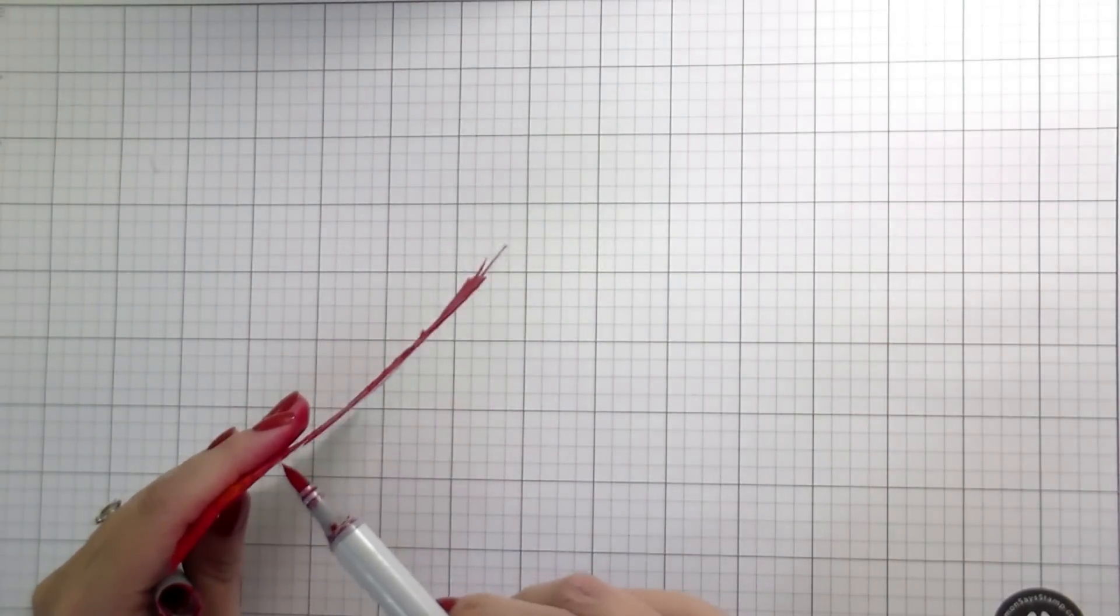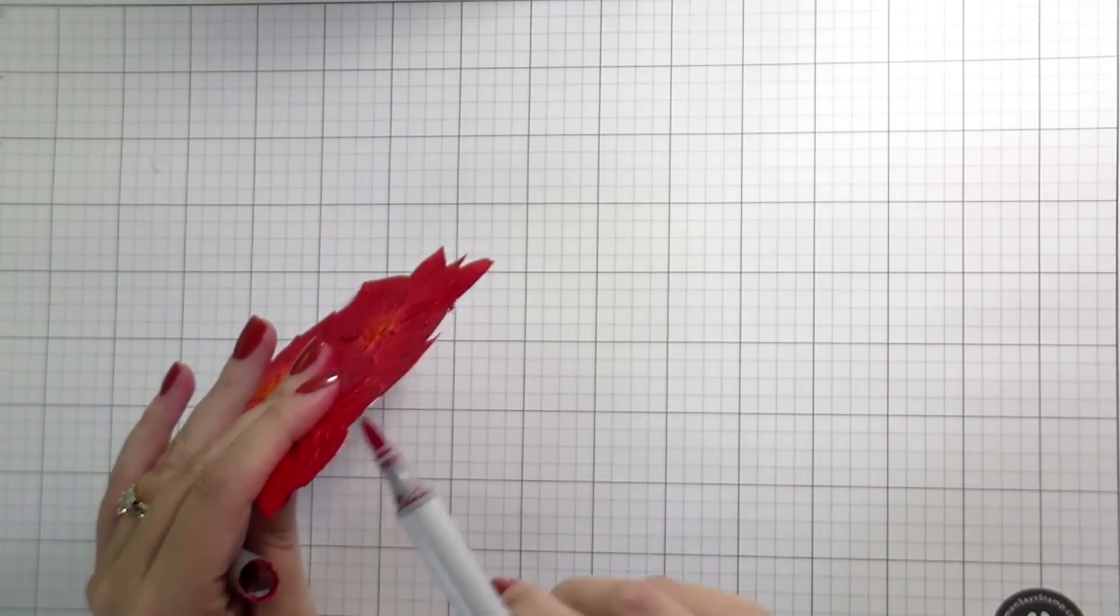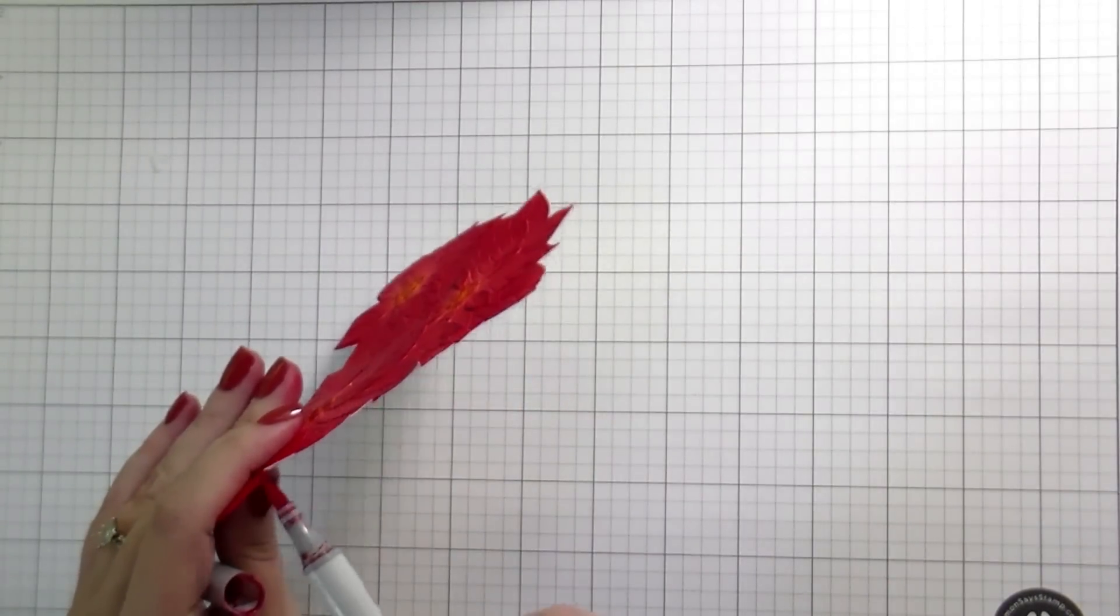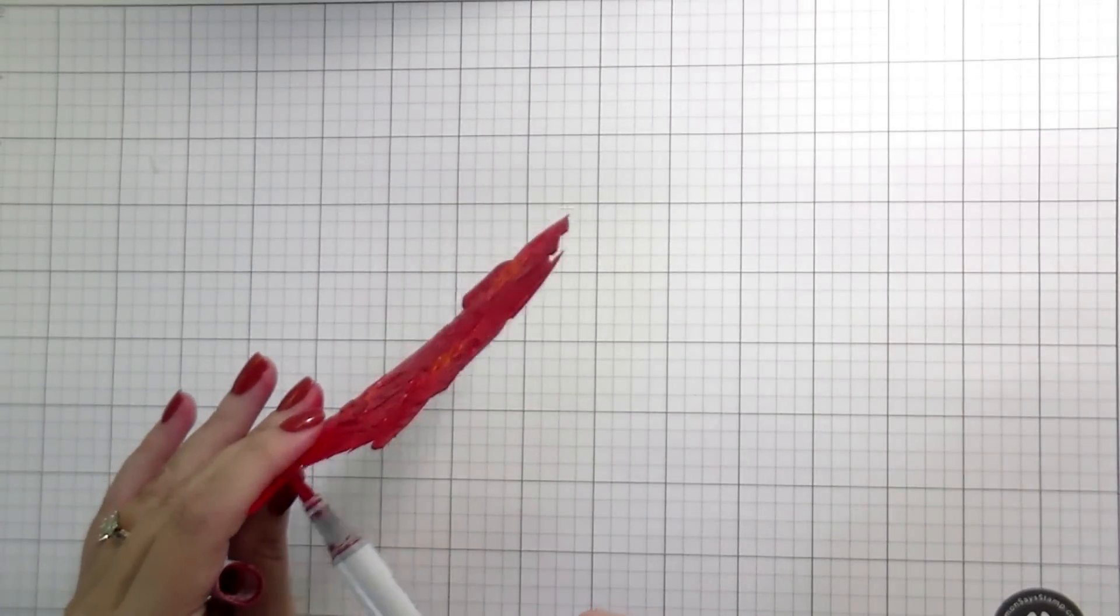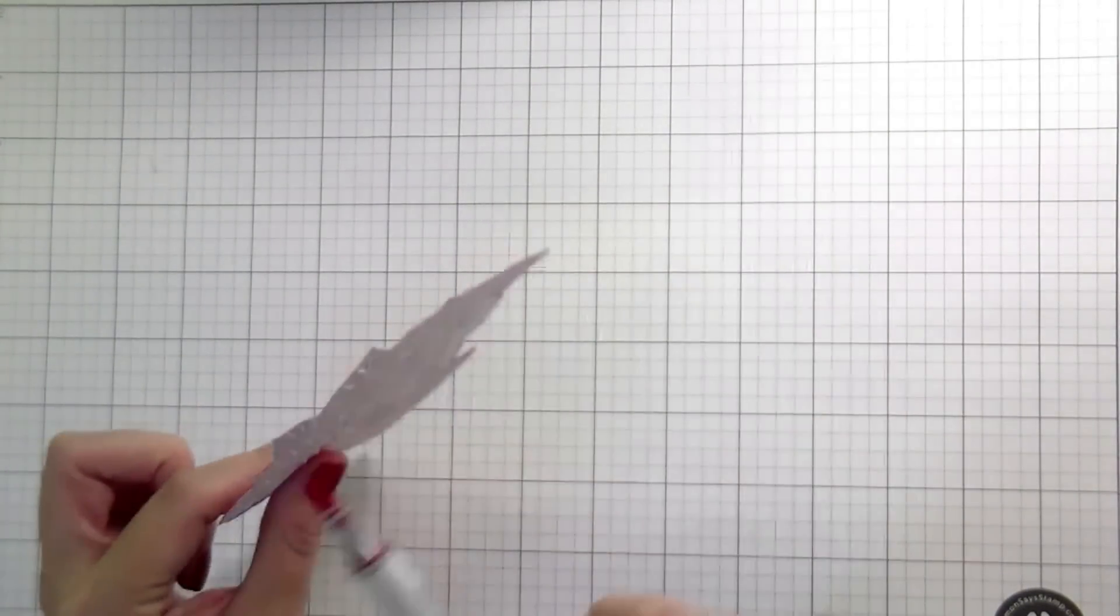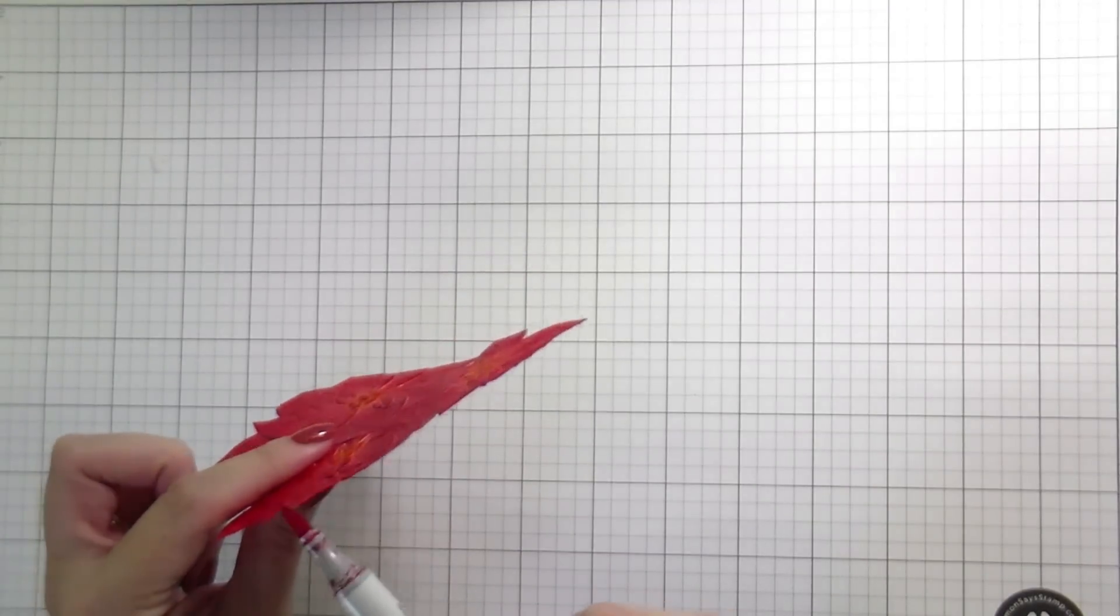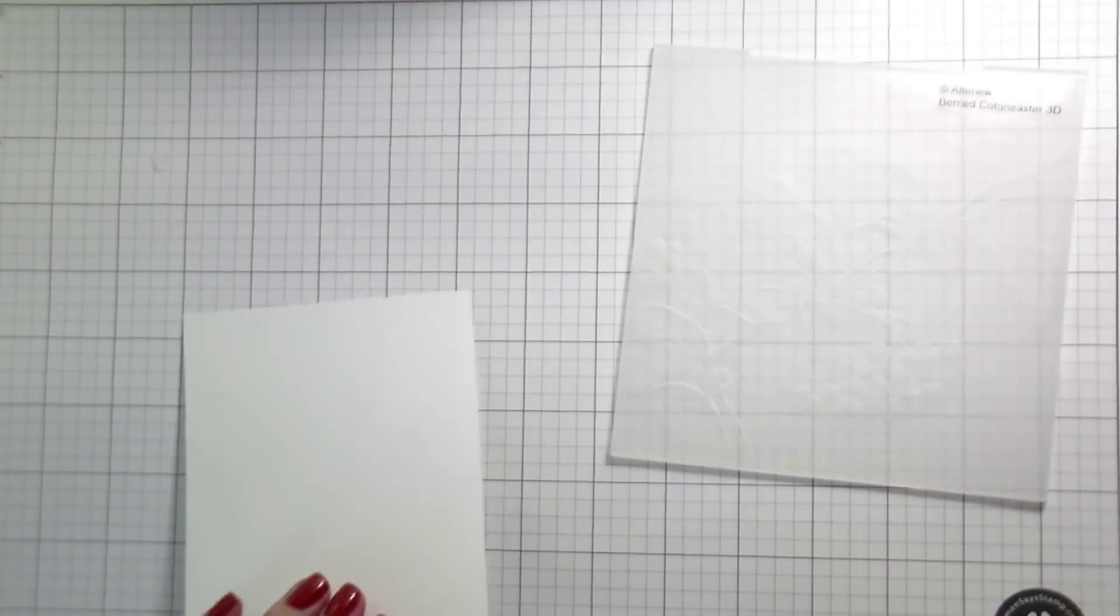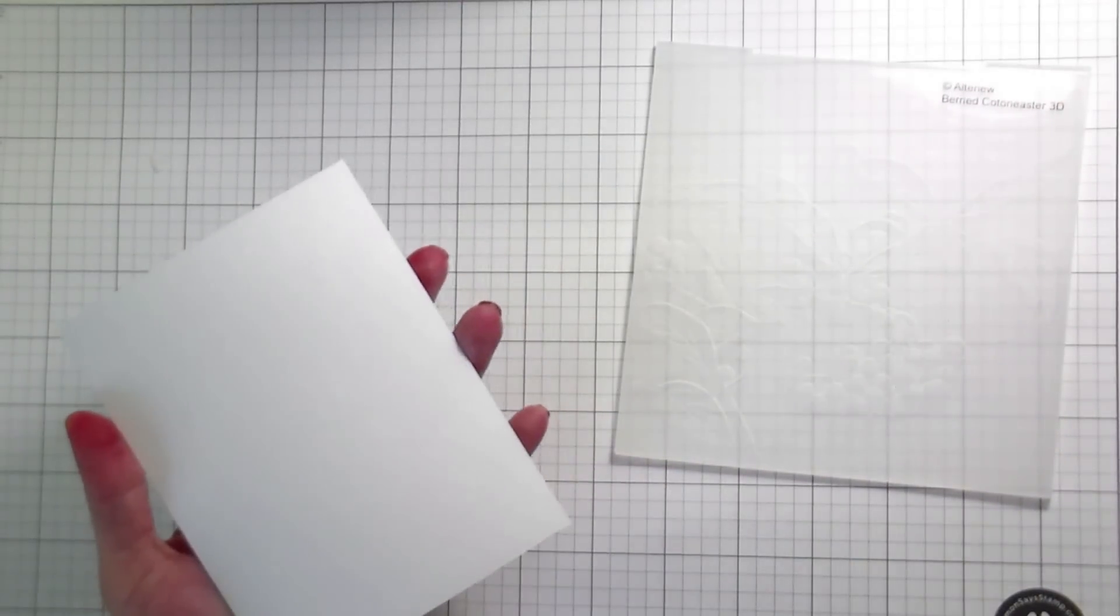So now that I have this trimmed out, just like anything else I would fussy cut, I am going to go back in. And I just found a quick red that I grabbed to go around the edges, just so that they wouldn't be white, because I knew that I was going to be putting this on a darker card base. So this is the quick, easy, simple way to add a lot of color to your image and get very pretty results.